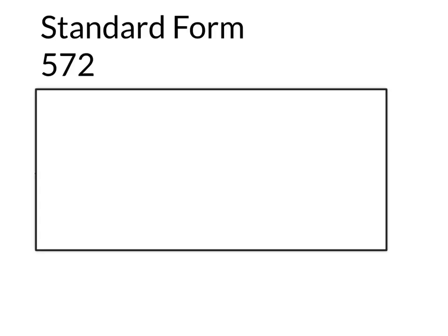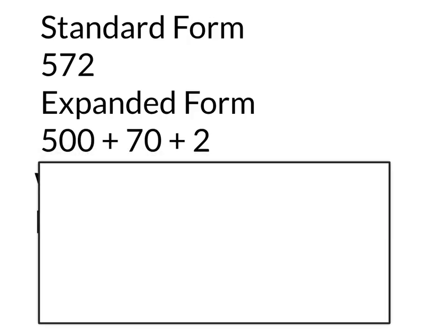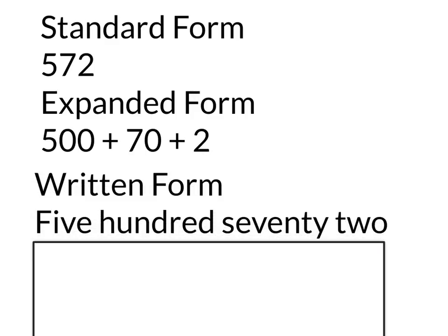Finally, another skill students work on with place value in school is representing the different forms of a number. Standard form is the number just written, such as 572. To practice place value, students are often asked to write it in expanded form, where they write each value of the number individually — 500 plus 70 plus 2. Students are also asked to write it in written form, where they write the number in words.